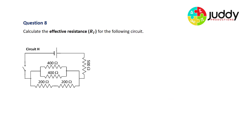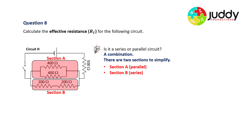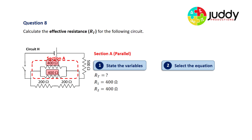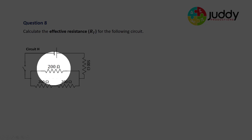Our final question, question eight: calculate the effective resistance for the following circuit — the most complex circuit we're analysing in this video. It's a combination circuit. There are two sections to simplify: section A, where 400 ohms and 400 ohms are in parallel, and section B, where 200 ohms and 200 ohms are in series. For section A: R1 is 400 and R2 is 400. Using the parallel equation, substituting 400 and 400, we get a total resistance of 200 ohms. The two 400 ohm resistors in parallel are represented as a single 200 ohm resistor.